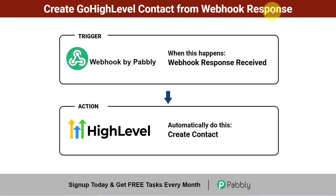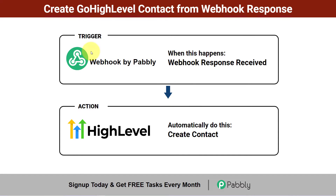How to create a GoHighLevel contact from a webhook response automatically. With the help of a webhook, we can connect different applications with GoHighLevel and create contacts automatically, but the condition is your application should support webhook. That application could be any application like a form builder, an email marketing tool, or a payment gateway. We will copy our webhook URL and paste it into that application, and whenever any event happens, the event data will be captured as our webhook response.